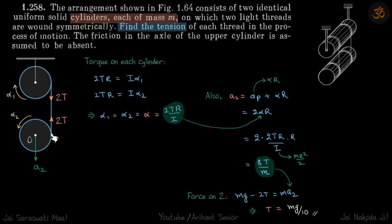Our force equation on this cylinder will be mg minus 2T equals ma2. But we don't know the value of a2, so to find that, let's examine this motion more carefully.